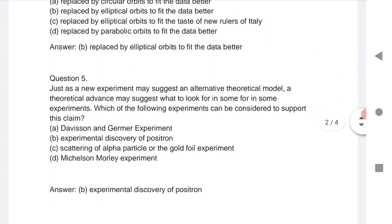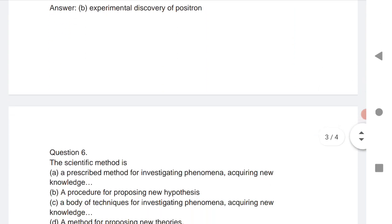Fifth question is: just as a new experiment may suggest an alternative theoretical model, a theoretical advance may suggest what to look for in some experiment. Which of the following experiments can be considered to support this claim? The experimental discovery of positron.